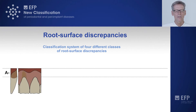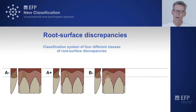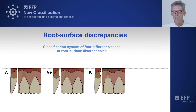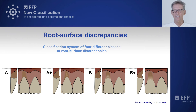In type A, you can see the cementoenamel junction — it is easily detectable from the facial and approximal views. The plus or minus indicates the presence or absence of a step. In A plus, you can detect the CEJ but there is a step present. In scenarios B, the CEJ is no longer visible due to root surface abrasion or discrepancies. This can be without (B minus) or with (B plus) a step — where a large surface defect on the root surface makes it impossible to detect the CEJ.